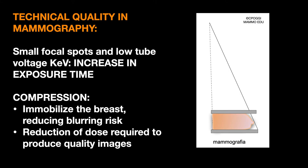Small focal spots and low tube voltage impose an increase in exposure time. Compression allows to immobilize the breast, and thus decrease the blurring risk. The thickness reduction also decreases the dose required to produce a high-quality image.